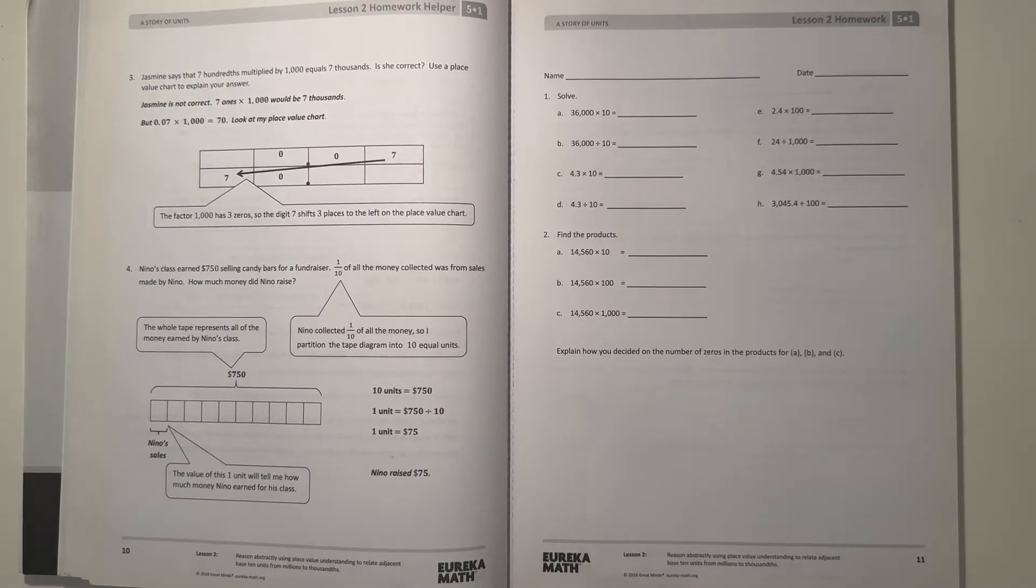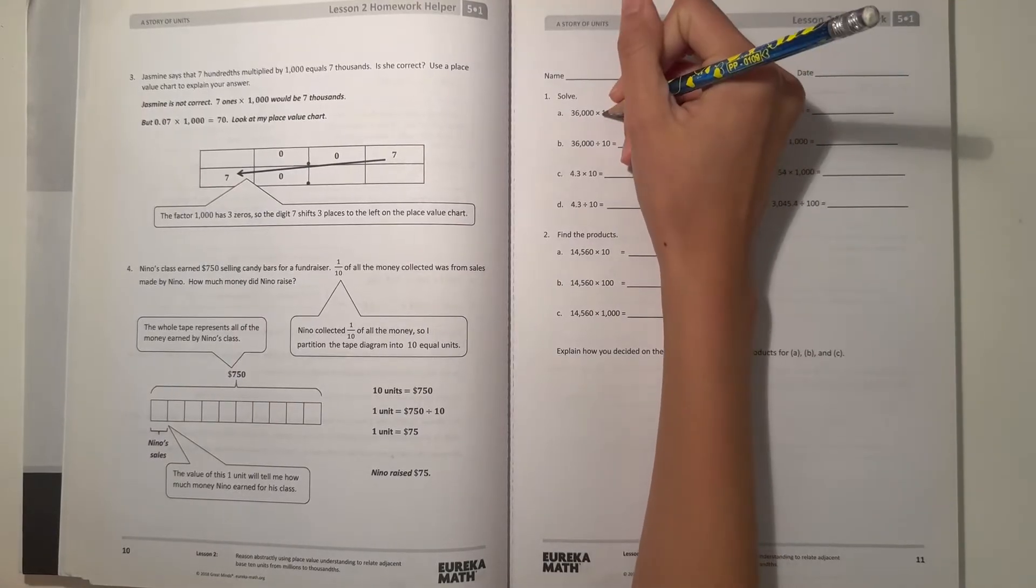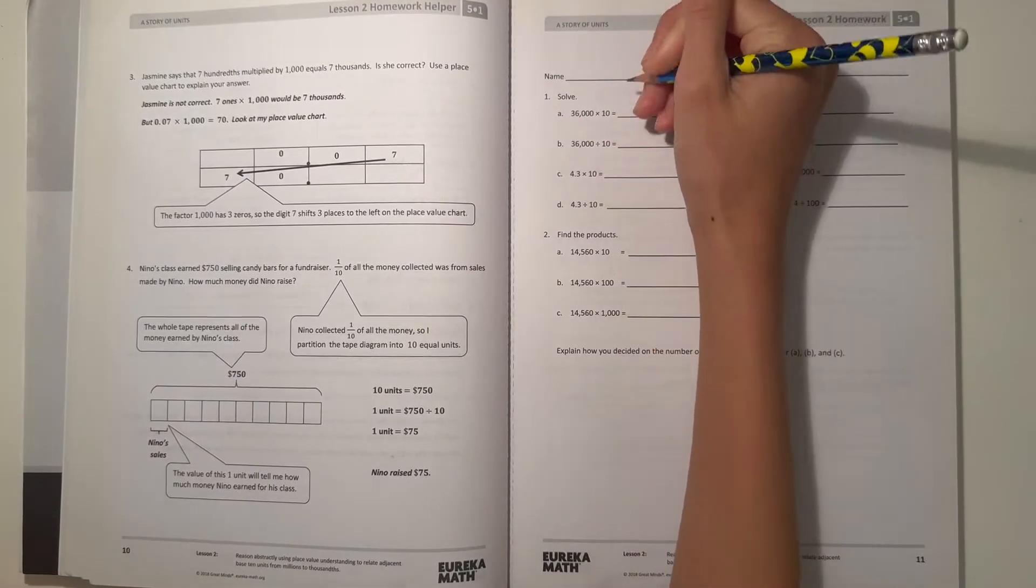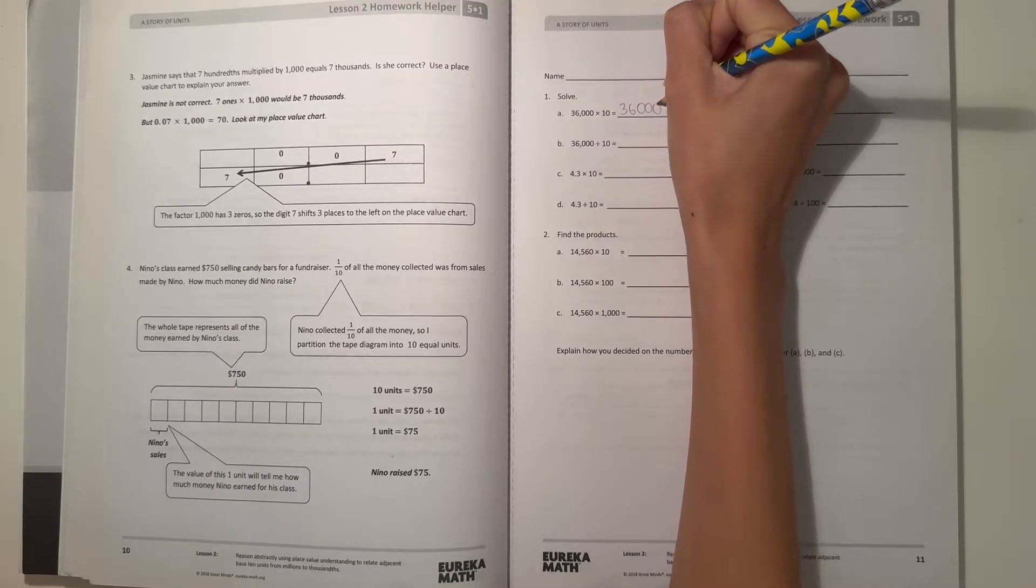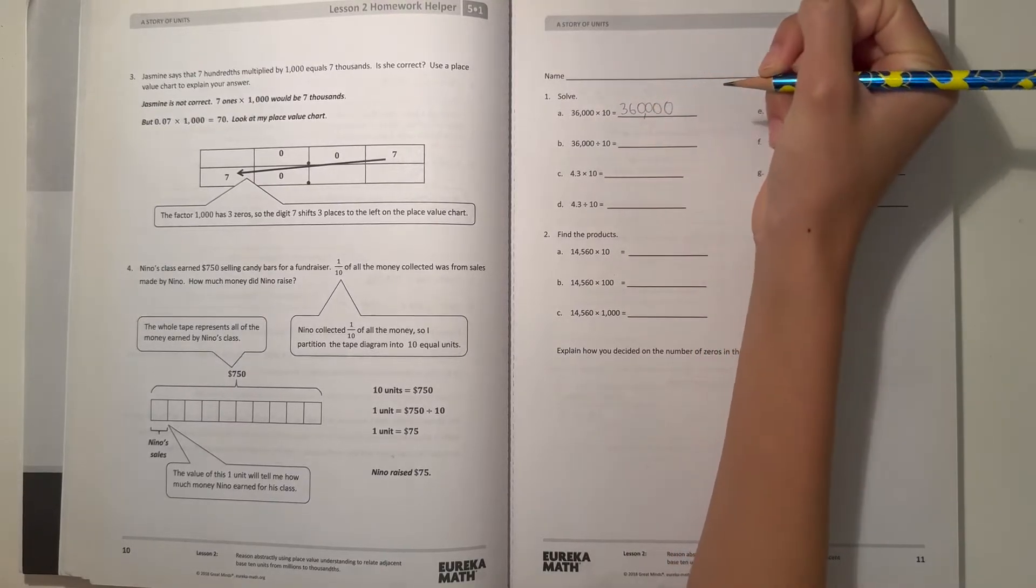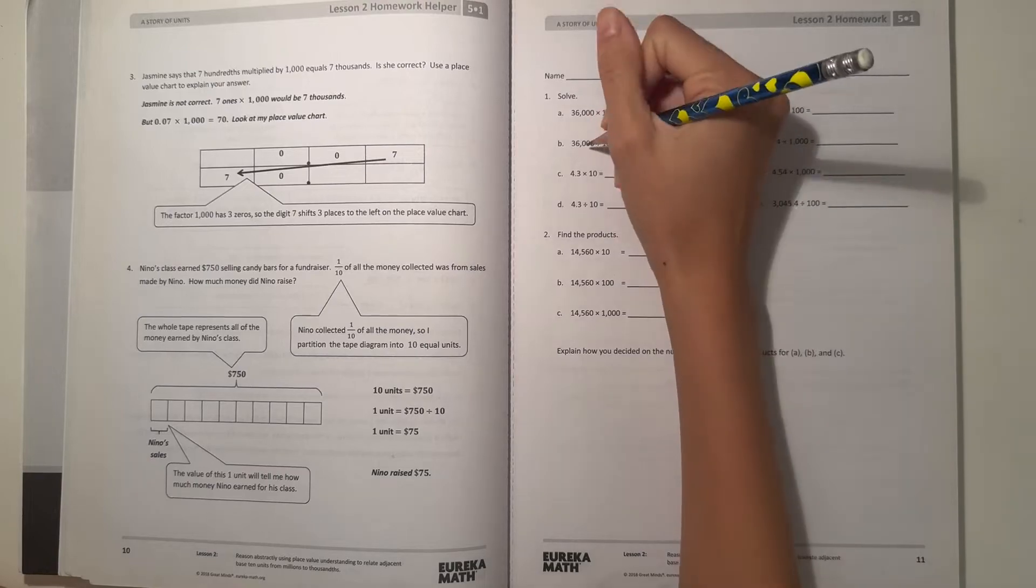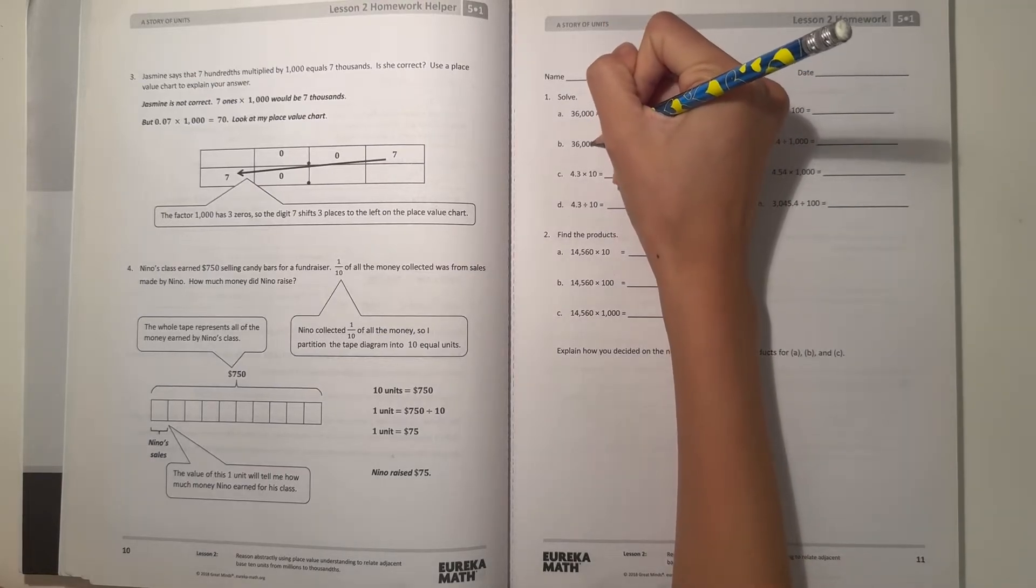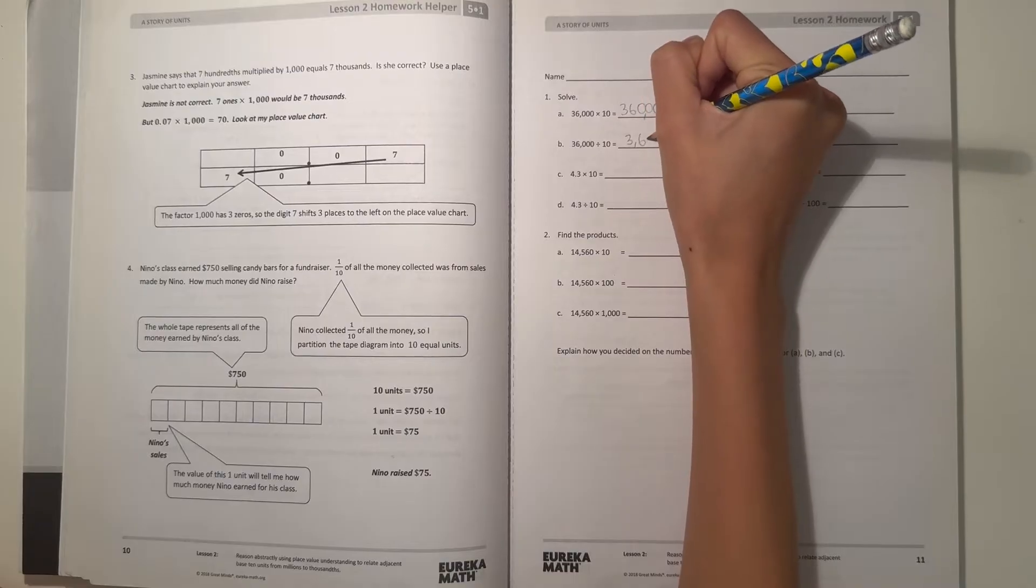Number 1, solve. Alright, so A, we have 36,000 times 10. So 10 has 1 zero, so we're adding 1 zero to 36,000. So that would be 360,000. And B, we're doing 36,000, but this time divide by 10. So then we're moving 1 zero because we're dividing, and 10 also has 1 zero. So this becomes 3,600.